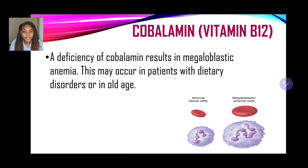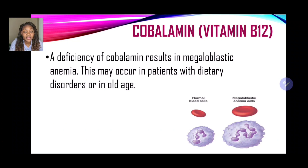A deficiency of cobalamin results in megaloblastic anemia. This may occur in patients with dietary disorders or in old age. When we have a lack of iron in the diet or in the body, we have iron deficiency anemia. As it relates to cobalamin or vitamin B12, this type of anemia is known as megaloblastic anemia. As the name 'mega' suggests, the red blood cells enlarge, whereas with iron deficiency anemia, the red blood cells are lacking — too few red blood cells.